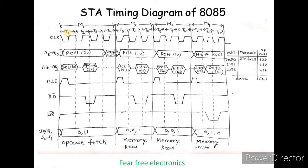In the first machine cycle M1, the first clock pulse is T1 state, second is T2, third is T3, fourth is T4 — and M1 takes up to T6 in opcode fetch. The opcode is available at address 2080. The program counter holds the instruction address 2080. PCH carries the higher-order address and PCL carries the lower-order address.